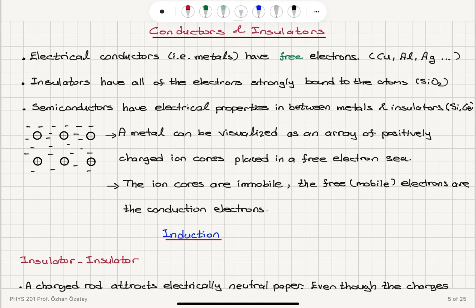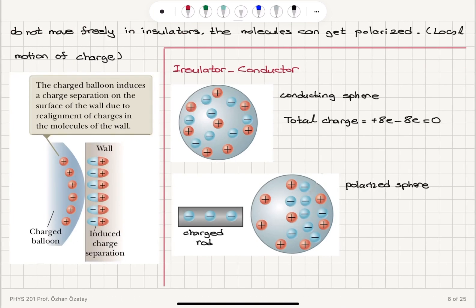The free mobile electrons act as conduction electrons and are responsible for conducting electricity. Now, when we think about the electrification process by induction, we have an interesting situation when we bring a charged insulator near an electrically neutral insulator. For example, a charged rod actually attracts electrically neutral paper. We normally expect positive charges to attract negative charges, but the paper is electrically neutral.